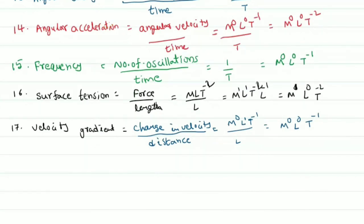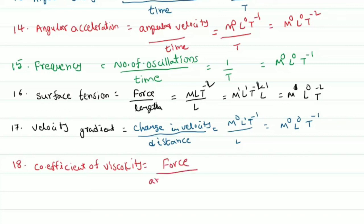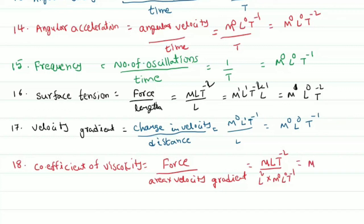The 18th physical quantity is coefficient of viscosity. Viscosity is a property of liquids. The coefficient of viscosity equals force divided by area into velocity gradient. Force gives M power 1, L power 1, T power minus 2; area gives L power 2; and velocity gradient gives T power minus 1. We will cover more definitions and dimensional formulas in our next class. Thank you.